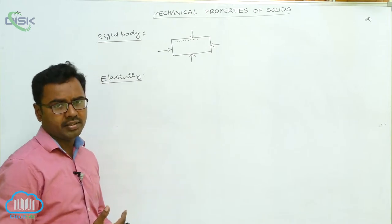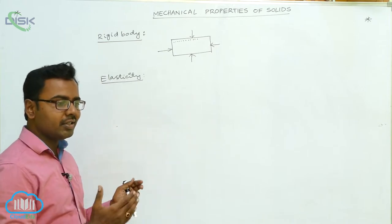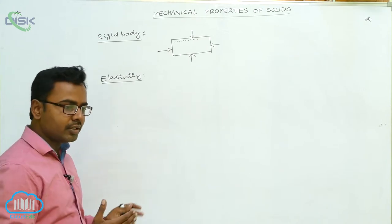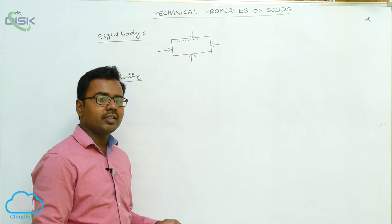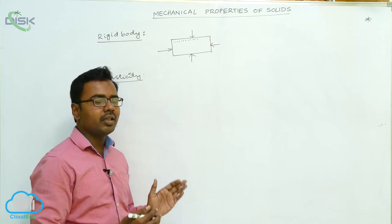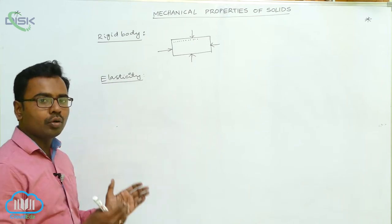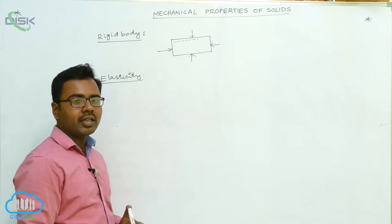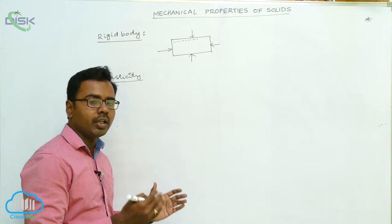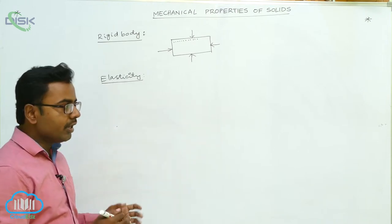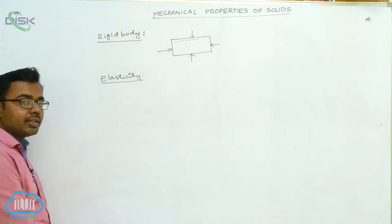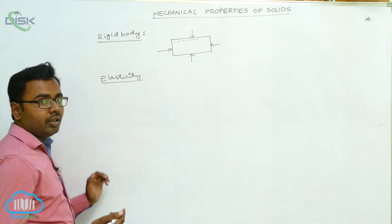The rubber band and spring are called elastic bodies. Elasticity is a property of solid bodies due to which they regain their original size and shape on the removal of the external deforming force.